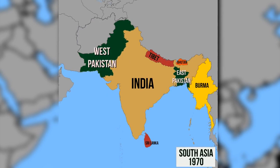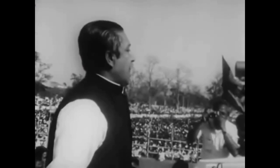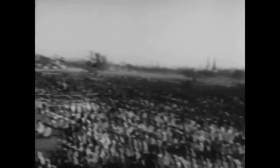The Awami League won 160 out of 300 seats exclusively from the more populous province of East Pakistan. This gave the party a majority in the National Assembly of Pakistan, and should have resulted in an East Pakistan-led government with Mujib as Prime Minister.